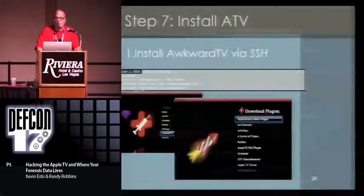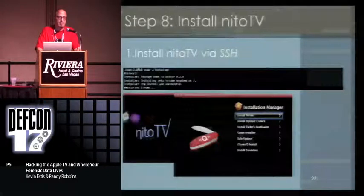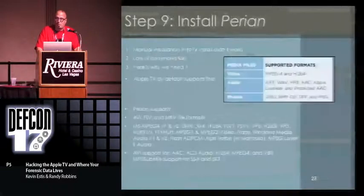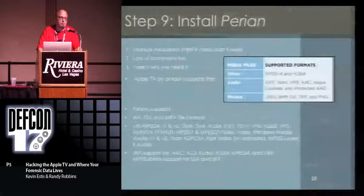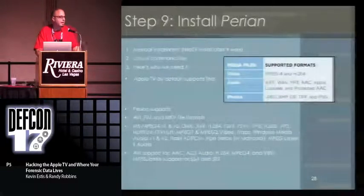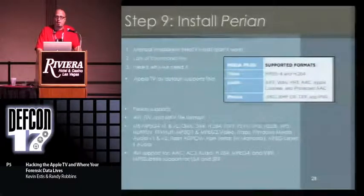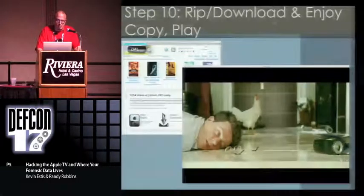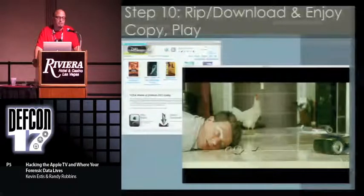Then you actually had to install ATV, which gave you the capability to install all of the other great programs. One of those is Perian. If you use a Mac to play media other than what you can download, you're going to need Perian, because it will actually let you play things other than MP4s and H.264 encoded media. So you install Perian and all of a sudden you can rip your movies, download them, copy them, play them on the Apple TV. Your Apple TV has probably three times the functionality.